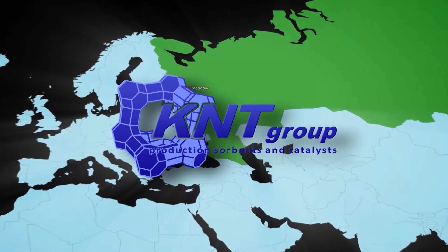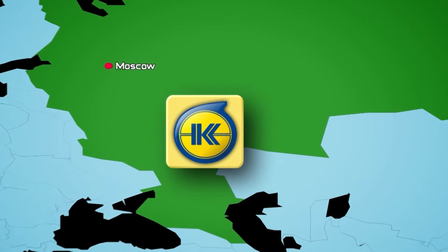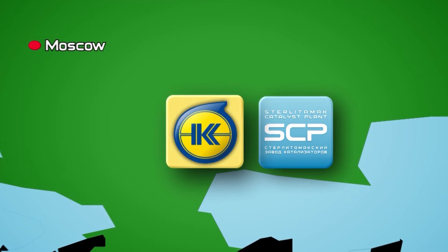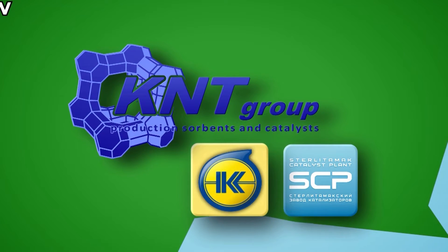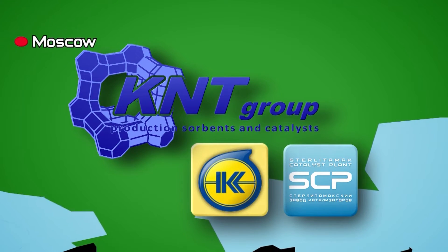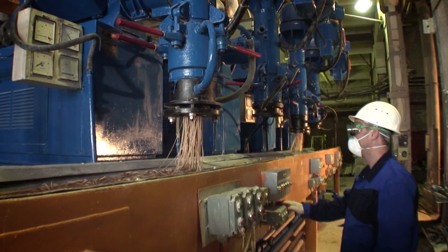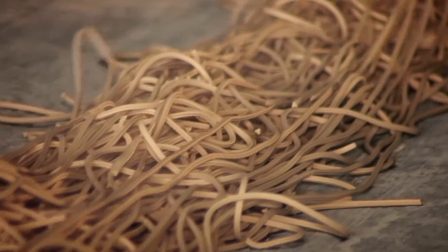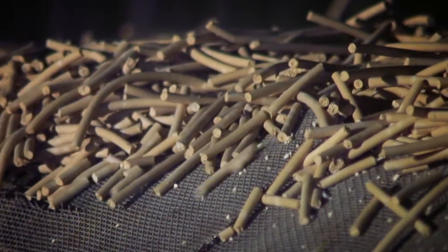KNT Group is a major manufacturer of adsorbents and catalysts in Eastern Europe. The KNT Group is made up of two plants, Usterlitamak Catalyst Plant or SCP and Ishimbai Specialized Chemical Plant of Catalysts or ISCPC. KNT Group has been producing molecular sieves since 1985, thereby boasting a great deal of experience in zeolite production spanning a quarter of a century.